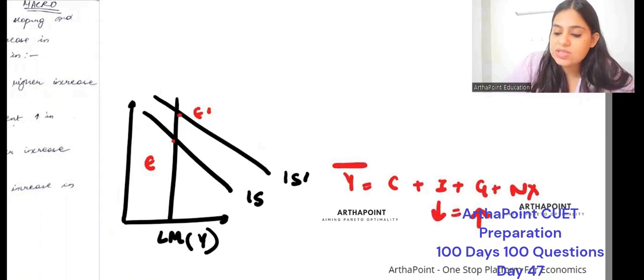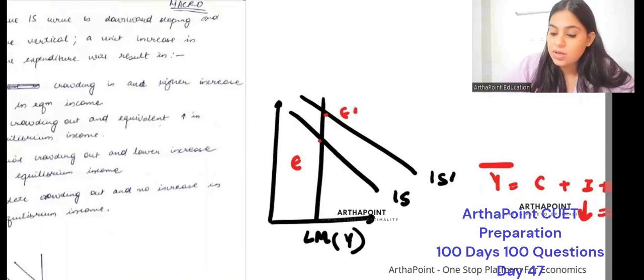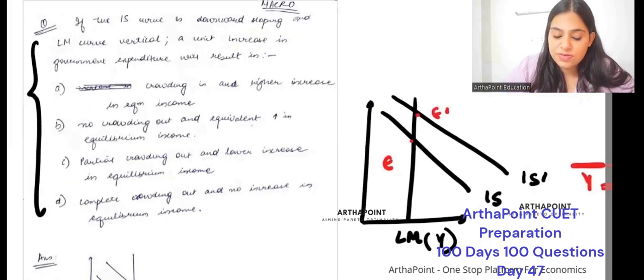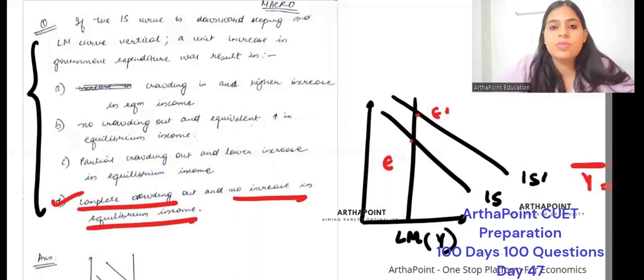so I will decrease by the same amount. So full crowding out effect - we will say that there will be complete crowding out and no increase in equilibrium income. So the answer